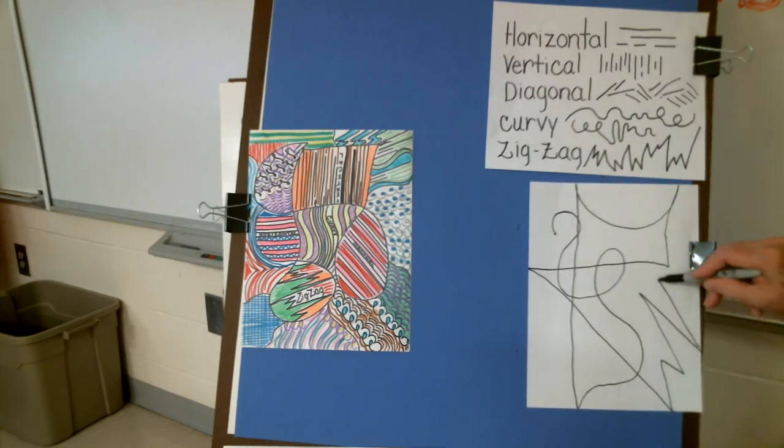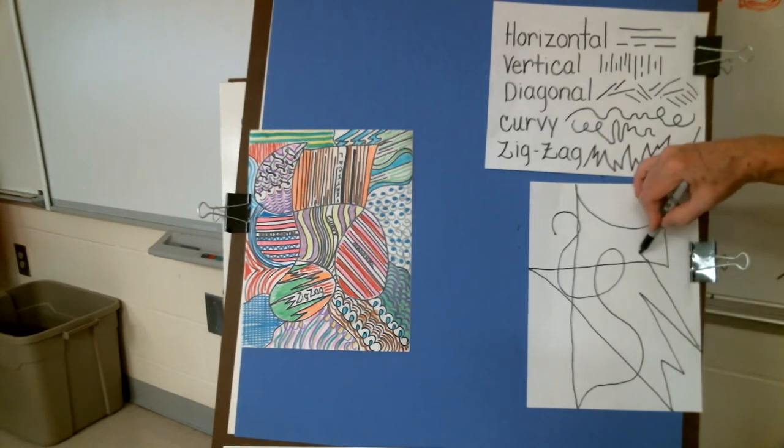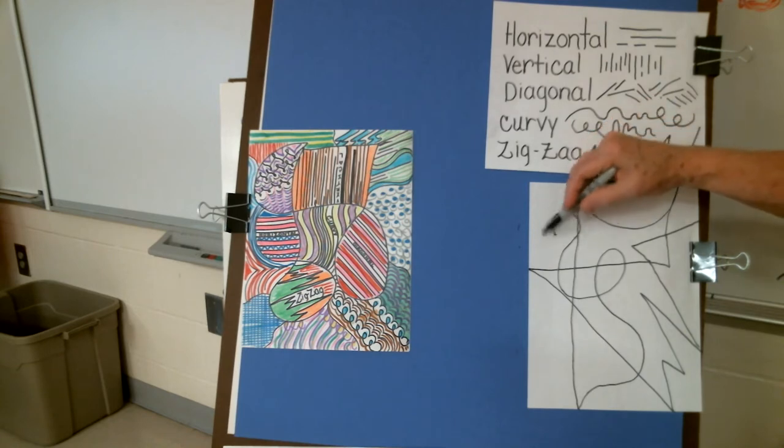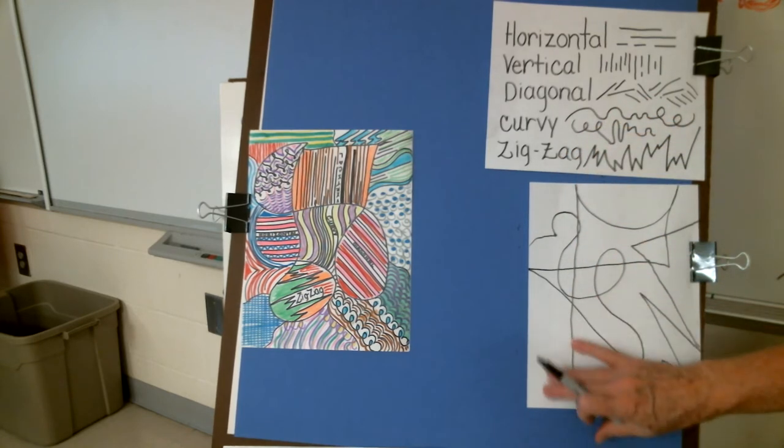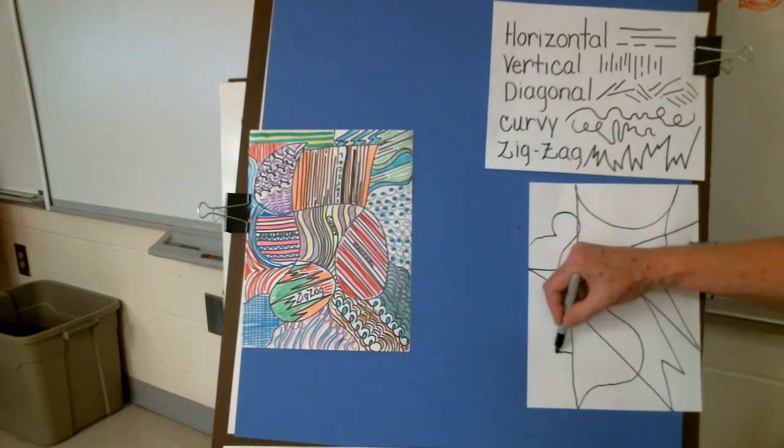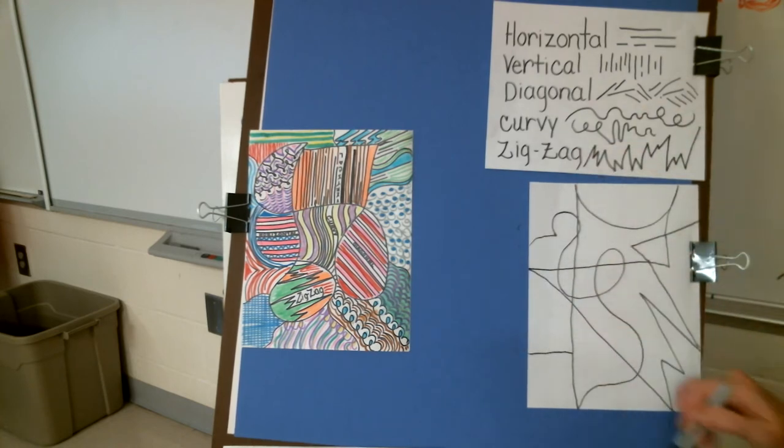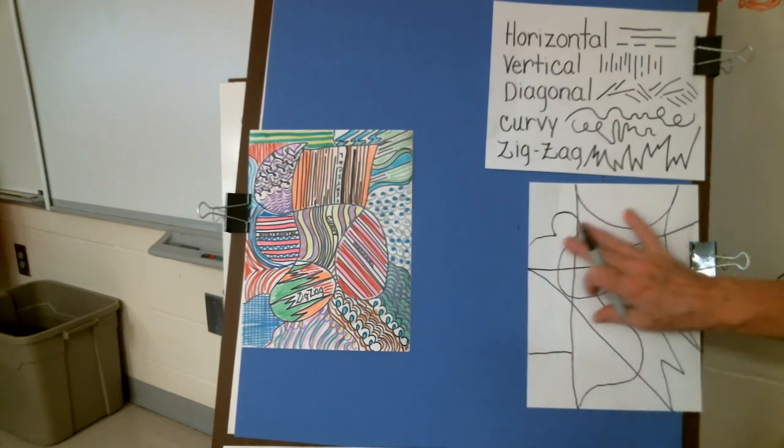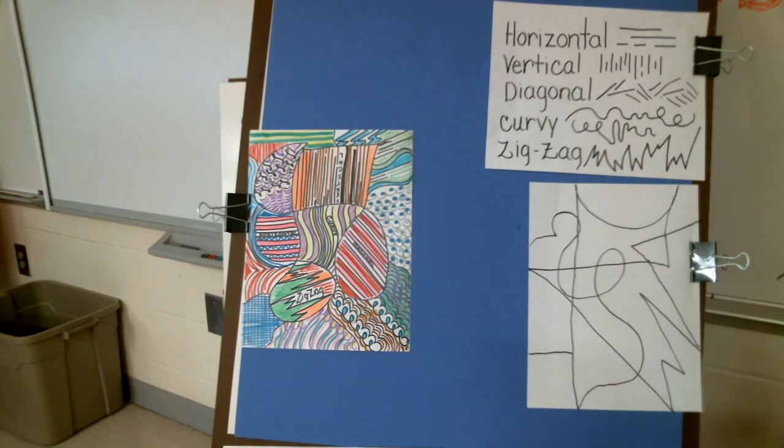It's better if you run off the paper so that it creates shapes even in the corners here. So I have a big shape right here. I'm just going to use a horizontal line to divide that area up so that it can have more patterns and make a better design. So that's how you start it. That's step one.